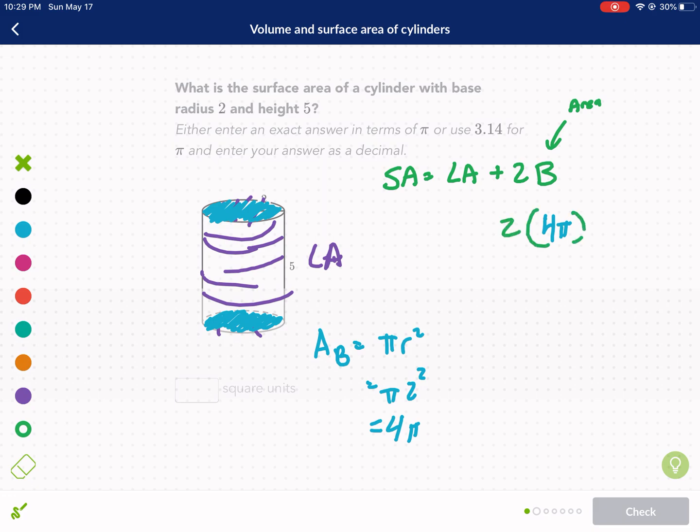Okay, now we have our lateral area. Lateral area—how do we think about this? Well, if we were to unravel, kind of like a soup can, unravel the sides of this cylinder, it would form a rectangle where this distance is 5.